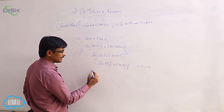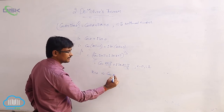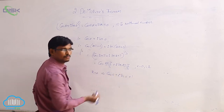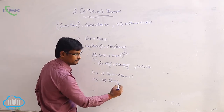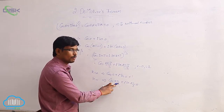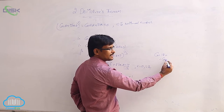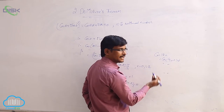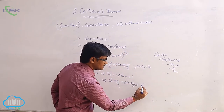Taking k equal to 0 gives cos 0 plus i sin 0, which equals 1. Taking k equal to 1 gives cos(2pi/3) plus i sin(2pi/3). Now 2pi/3 is 120 degrees. Cos 120 can be written as cos(90+30), which is in the second quadrant where cosine is negative, giving minus sin 30, so the value is minus 1/2.